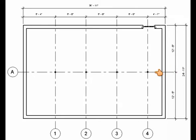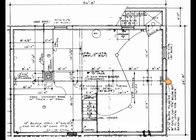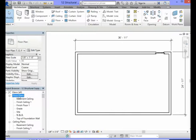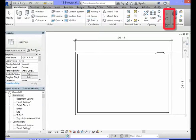We will first create our horizontal grid line. The horizontal grid line we are about to create represents the girder that you see in the foundation plan. In the TOF floor plan view, in order to create the grid line you will need to select your architecture tab. In the datum panel of the ribbon you will select grid.